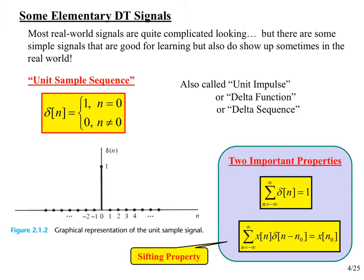We want to touch on some fundamental discrete time signals we'll use all the time. Proakis and Manolakis call it the unit sample sequence; I prefer to call it the unit impulse, delta function, or delta sequence. It is equal to zero everywhere except at N equal to zero, where it equals one. Be careful — this is very different from the continuous time delta function, which goes to infinity at zero and has unit area. In discrete time, the delta function is much easier to specify and is an honest-to-goodness function.